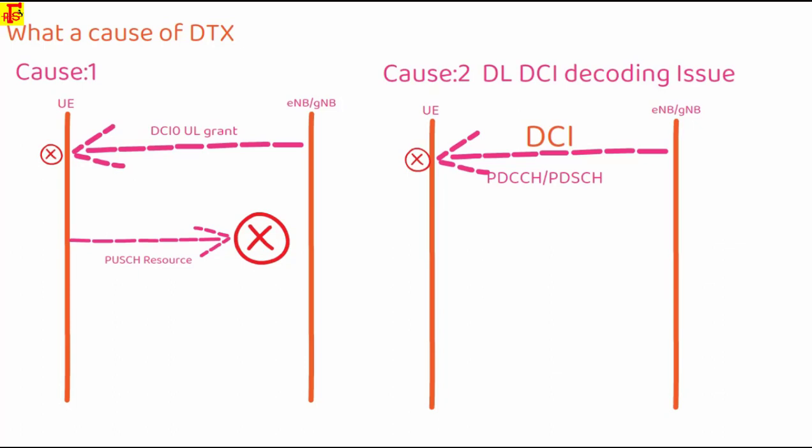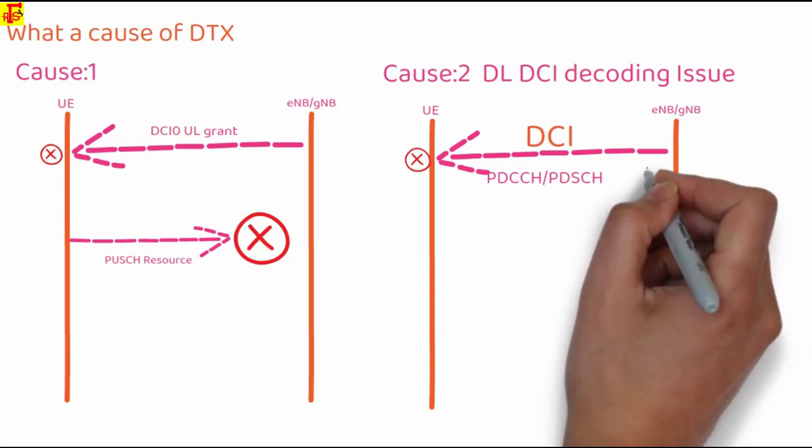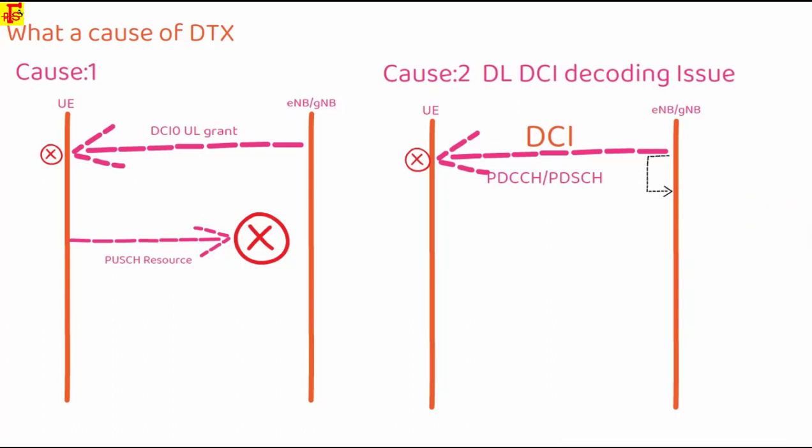eNodeB will ask its physical layer to decode the HARQ for the PDCCH it transmitted. eNodeB is expecting that some HARQ is received, so it is asking the physical layer to decode the HARQ. But since UE never decoded the DCI, it won't even attempt to decode the PDCCH.